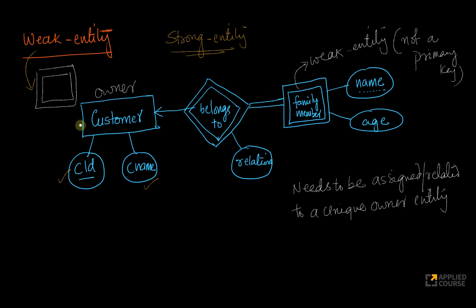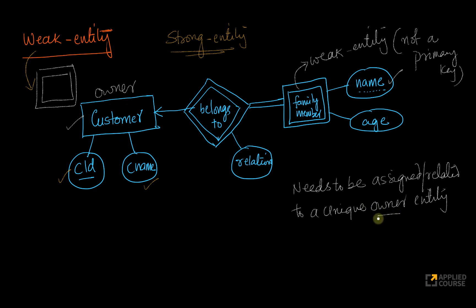A customer has a proper customer ID. But given a customer ID, if you are also given the name of a family member, you can uniquely determine who that family member is. The name alone is not a primary key — it is a key attribute of the weak entity, represented using dotted lines. You can determine the family member given the name and the owner entity details. If you just give me the name, I cannot determine who the family member is; I also need the owner entity's primary key, such as the customer ID.